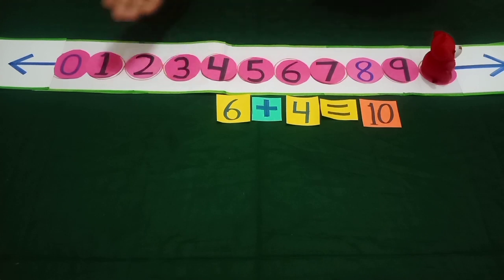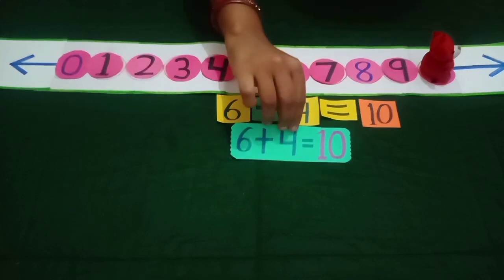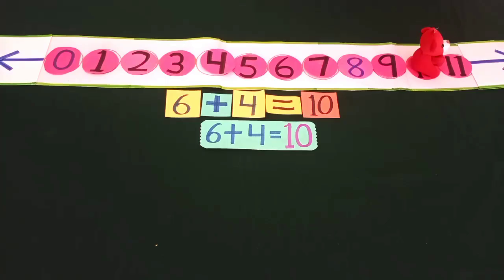Do you see students? Bunny starts jumps from left to right. It means when we go forward from left to right on number line, we do addition of numbers. So six plus four is equal to ten.